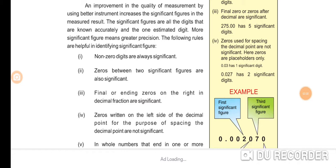Significant figures are all the digits that are known accurately plus one estimated digit. More significant figures means greater precision. The following rules are helpful in identifying significant figures: